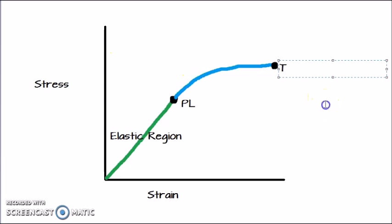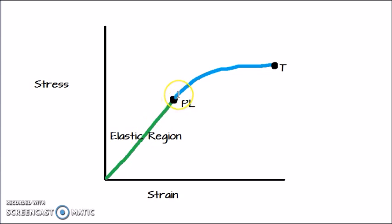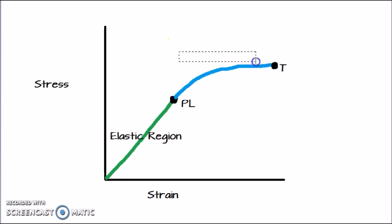The green area is the area of elastic deformation — the material comes back to its original position after the stress is removed. But the blue line after the proportional limit represents when we apply stress and the material does not regain its original position; there is some amount of permanent deformation left in the material. You can label this as plastic deformation.